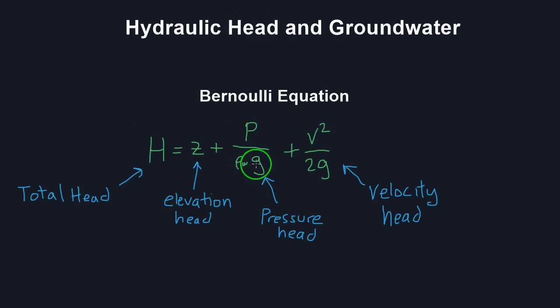P over rho W times G is the pressure head. And rho W is the density of water and G is the gravitational constant. The pressure head represents the pressure contained within a body of water. So if you had water in a pipe and it was pressurized inside that pipe, that would represent the pressure head.